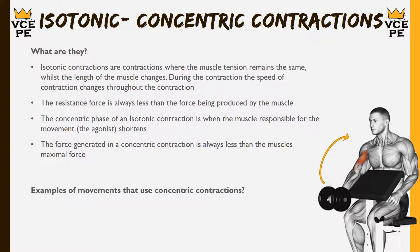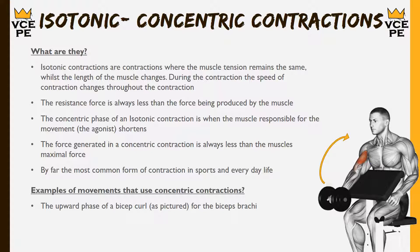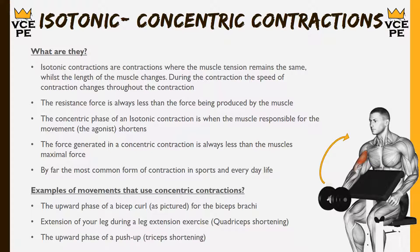Concentric contractions are probably the most common type of contraction we see in sports and in the real world. Examples include the upward phase of a bicep curl where the bicep shortens, the extension of the leg during a leg extension machine where the quadriceps shorten to pull the leg straight, and the upward phase of a push-up where the tricep shortens to extend the arm and push you away from the ground.